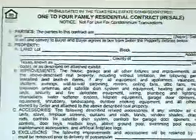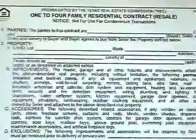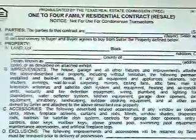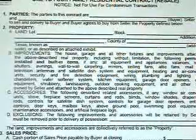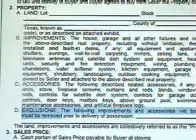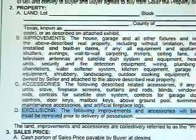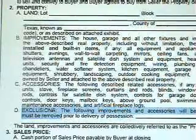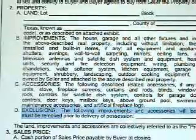Paragraph two of the contract is going to be the property location — the lot, block, the subdivision, the county, and also the physical address of the property. Paragraph 2D is called the exclusions, and this basically means if there are any improvements or accessories that the seller would like to retain, which must be removed prior to the delivery of possession of the property, it must be written in this section.